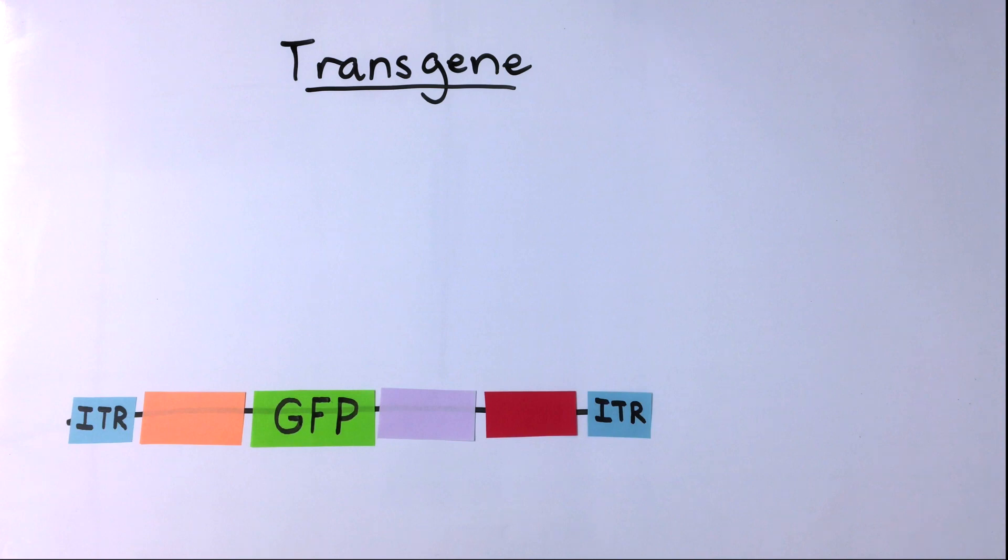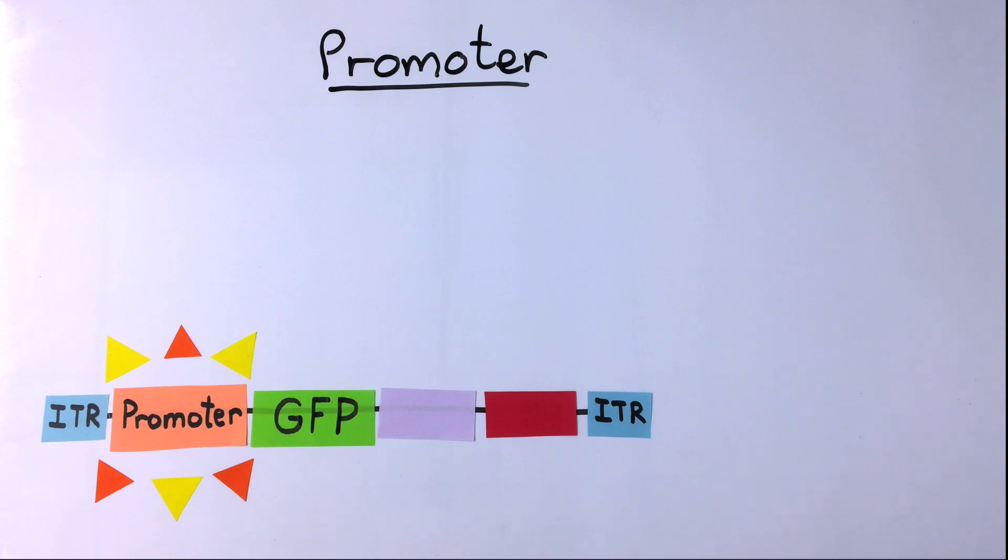In order for your gene of interest to be expressed in an organism, it will also need to be downstream of a promoter sequence. On plasmid maps, promoters can be found upstream of the gene it controls.